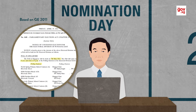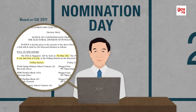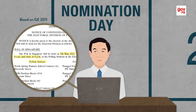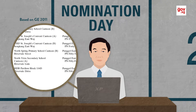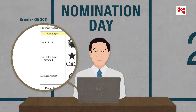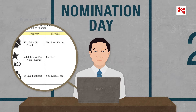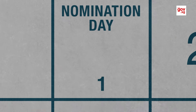The RO will then issue the Notice of Contested Election, which includes the date of polling day, the locations of all polling stations, names of candidates, their symbols, and their proposers and seconders.